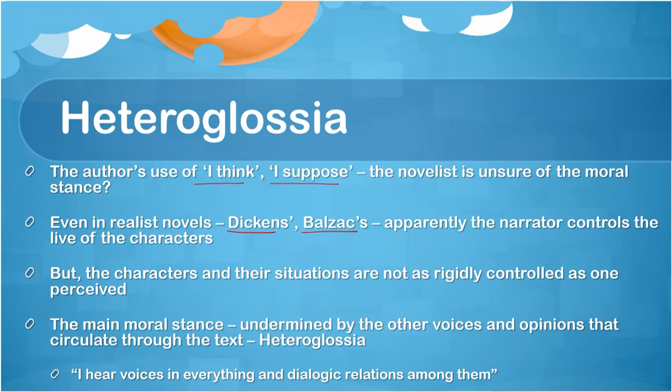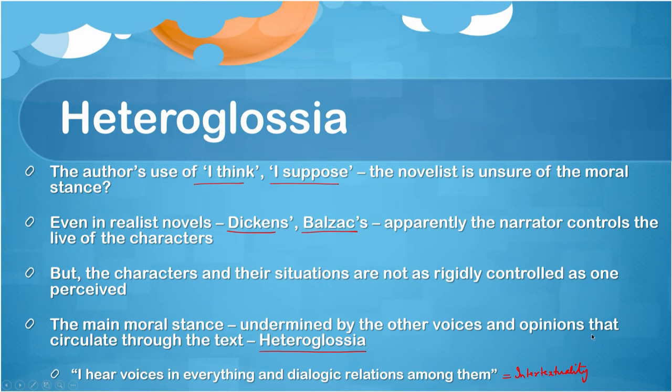Bakhtin argues that the narrator or author uses terms like 'I think' or 'I suppose' because they are not rigidly in control of the characters and events in the novel as we perceive them to be. The moral stance that most realist novels foreground is also undermined by the other voices and opinions that circulate through the text. To talk about this aspect Bakhtin used the term heteroglossia, which became extremely popular in the transition from structuralism to poststructuralism. To quote Bakhtin: 'I hear voices in everything and dialogic relations among them' — and this could be termed intertextuality, which Kristeva extensively theorised and popularised.